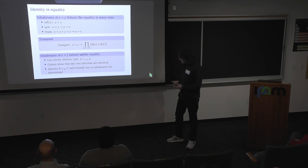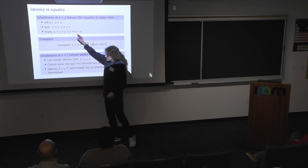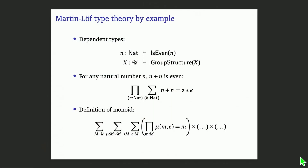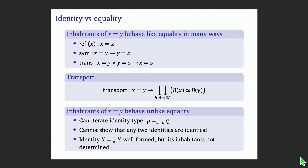We have already seen the equality type — it appeared briefly. Whenever we have two inhabitants x and y of the same type, we can form the type of identities between these two elements. We use suggestively this equality symbol to denote this type, so x = y is a type. It does behave like equality in some respects, but also unlike equality in some other respects — and that is the purpose of this slide.